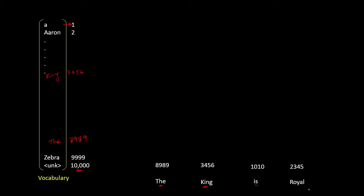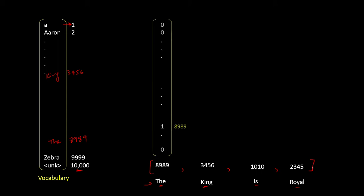And similarly, the word 'is' and the word 'royal'. Then this sentence can be converted into a vector with these values. But we cannot use this vector directly in our model. We have to convert them into one-hot encoding form.